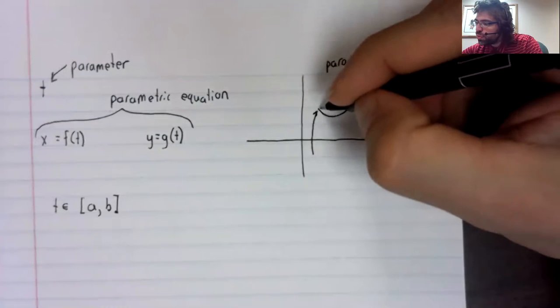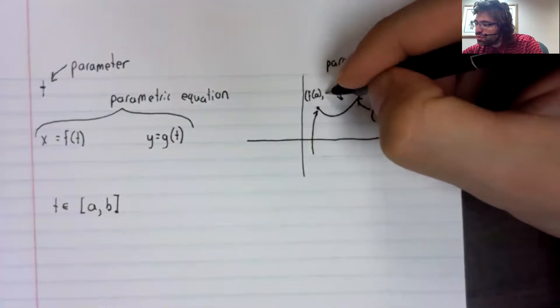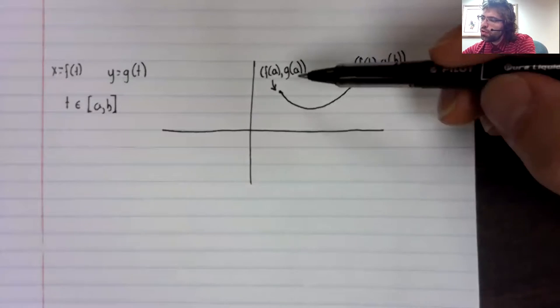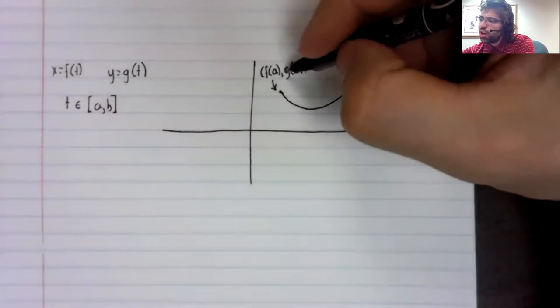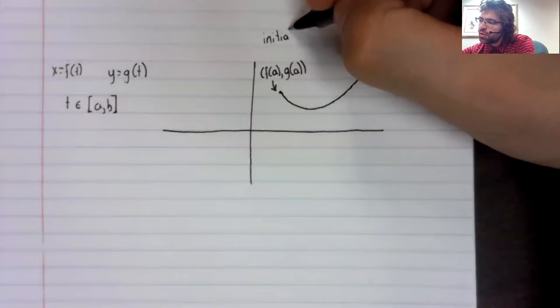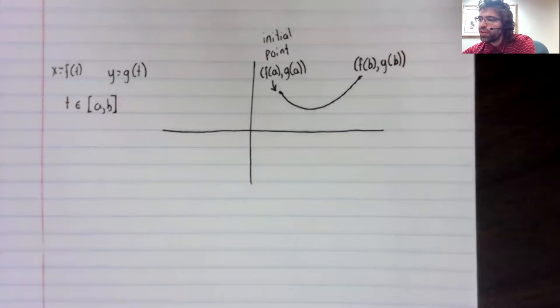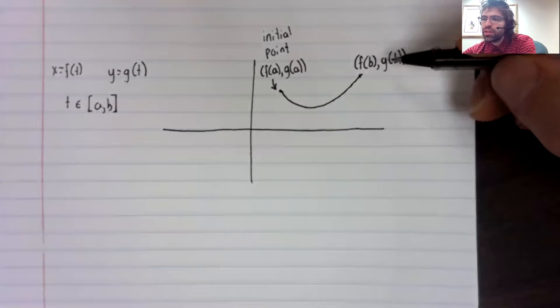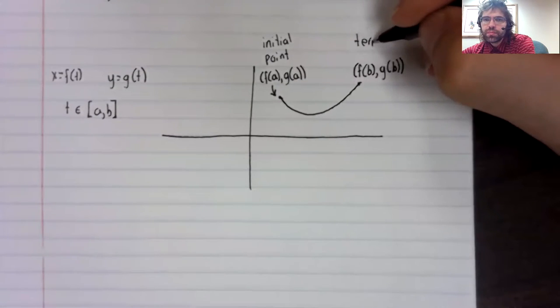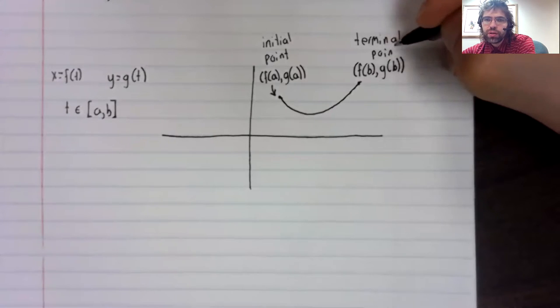If this point is f of a, the point f of a, comma, g of a is called the initial point. The point f of b, g of b is called the terminal point.